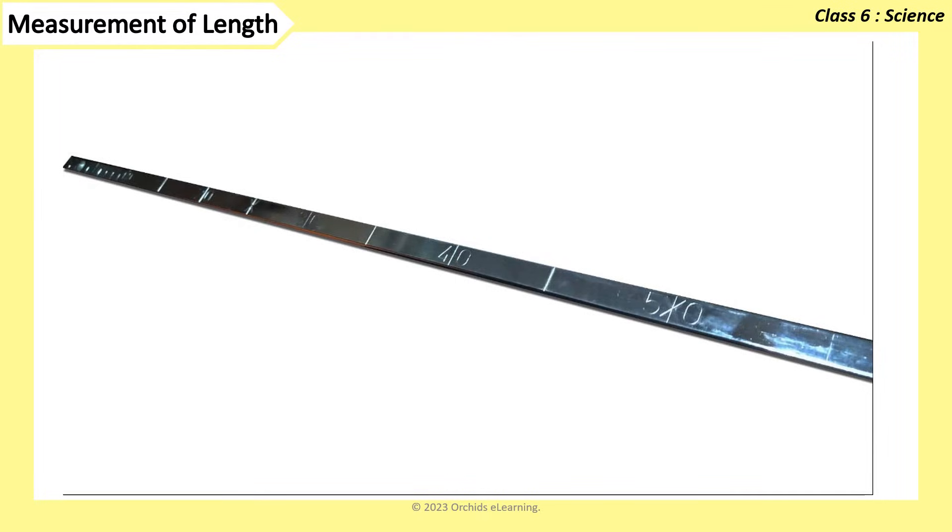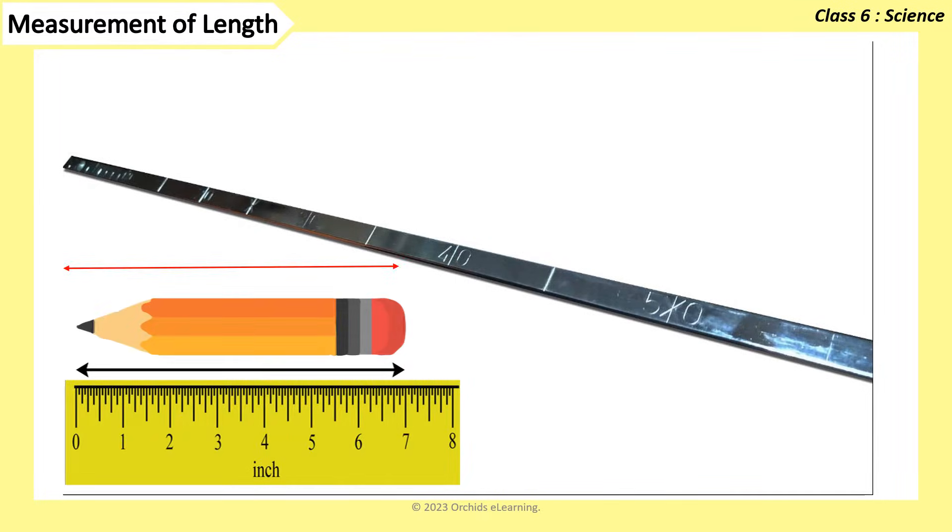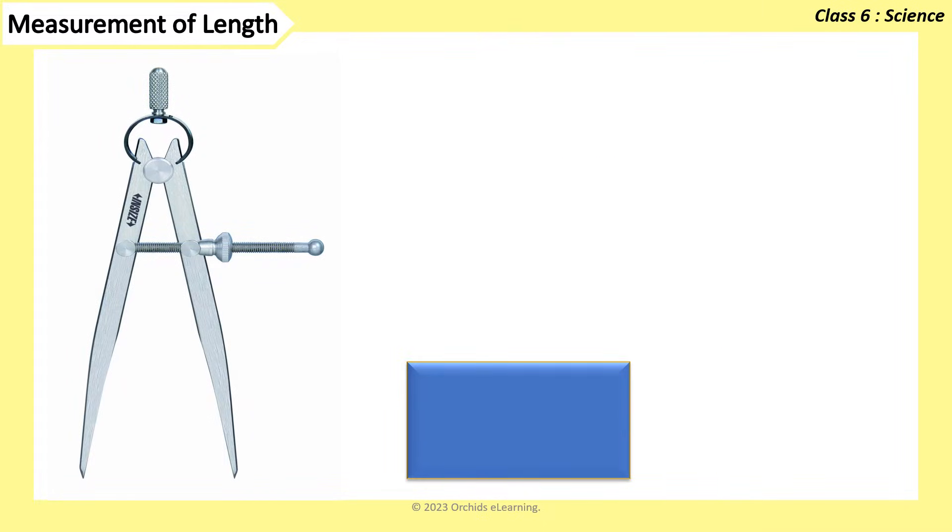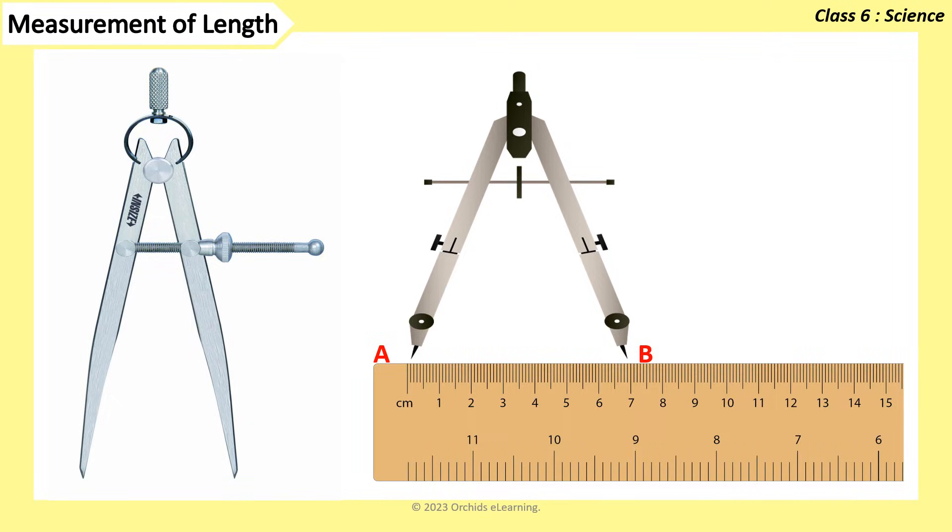The distance of something from one end to the other is called length. A divider is used to measure the distance between two points. The divider is placed such that each tip is at points A and B. Then, without disturbing the divider, the distance between the two points is measured with a ruler.